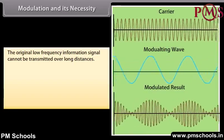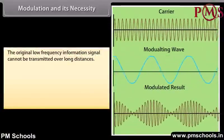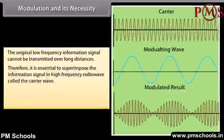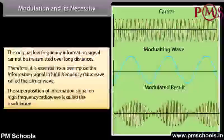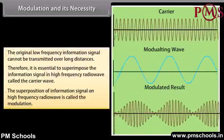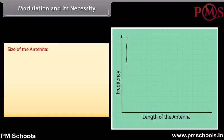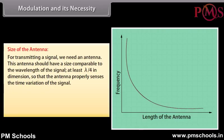Modulation and its necessity: The original low-frequency information signal cannot be transmitted over long distances. Therefore, it is essential to superimpose the information signal on a high-frequency radio wave called the carrier wave. This superposition is called modulation. Size of the antenna: For transmitting a signal, we need an antenna with a size comparable to the wavelength of the signal — at least λ/4 in dimension — so that the antenna properly senses the time variation of the signal. For an EM wave of frequency 30 kHz, the wavelength λ is 10 km; it is not possible to construct and operate such a long antenna.